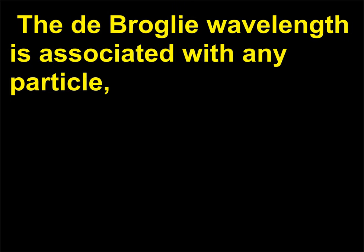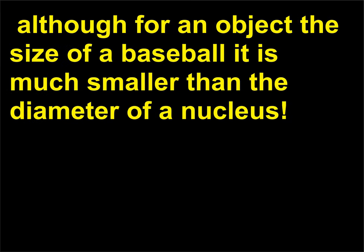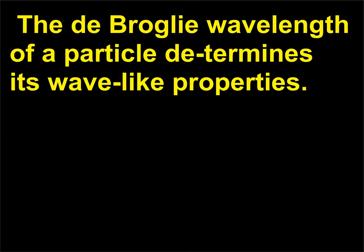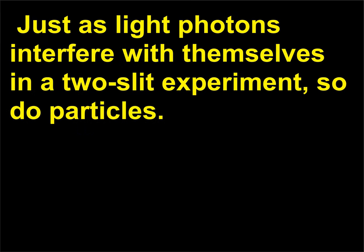The de Broglie wavelength is associated with any particle. Although for an object the size of a baseball it is much smaller than the diameter of a nucleus, the de Broglie wavelength of a particle determines its wave-like properties. Just as light photons interfere with themselves in a two-slit experiment, so do particles.